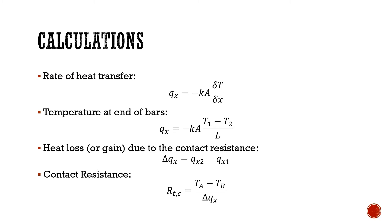Now the rate of heat transfer is calculated by minus K times A times dT/dX. In this case, K will be the thermal conductivity, A will be the cross-sectional area, dT will be the change in temperature, and dX will be the change in distance or displacement. Now dT/dX can be assumed to be the temperature gradient, which can be found if you draw a graph of temperature versus distance or displacement.